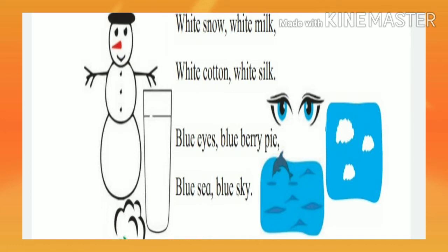Blue eyes, blueberry pie. Blue means nilat (blue). Look at the blue pictures. Blue eyes — nilat. Blueberry pie. Blue sea — samudra (sea) — blue sky. Sky is nilat. Blue color. So: blue eyes, blueberry pie, blue sea, blue sky.